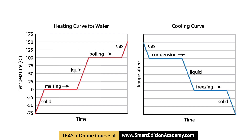Let's review. If a sample of water is losing energy but its temperature is not changing, what may be happening? Recall the cooling curve: if temperature is not changing but energy is being lost, it is either condensing or freezing. So the answer is — it is freezing.